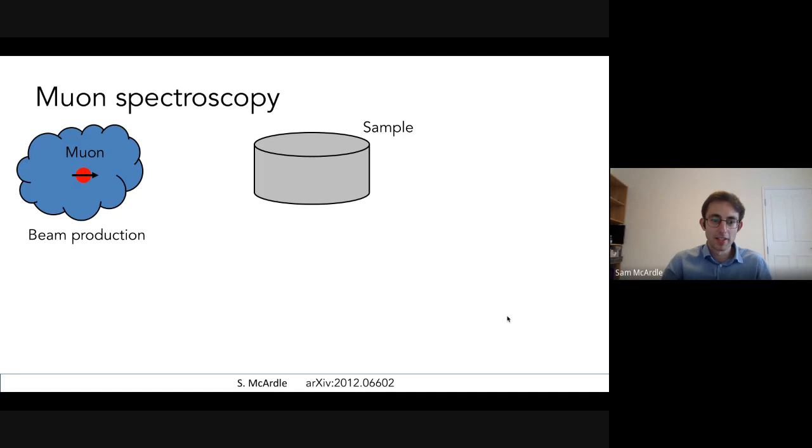So like cast your mind back to undergrad days, you might remember that the muon is essentially a heavy version of the electron. So these anti-muons are basically the heavier version of a positron. So they're also spin half particles. They have a plus one charge and they basically behave kind of like a light version of a proton. So they have a mass one ninth that of the proton. And as a curious quirk of the weak interaction, when these muons are produced, they are fully spin polarized. By which I mean like all of the spins of the muons point in the same direction. And that direction is aligned opposite to their direction that their momentum points in.